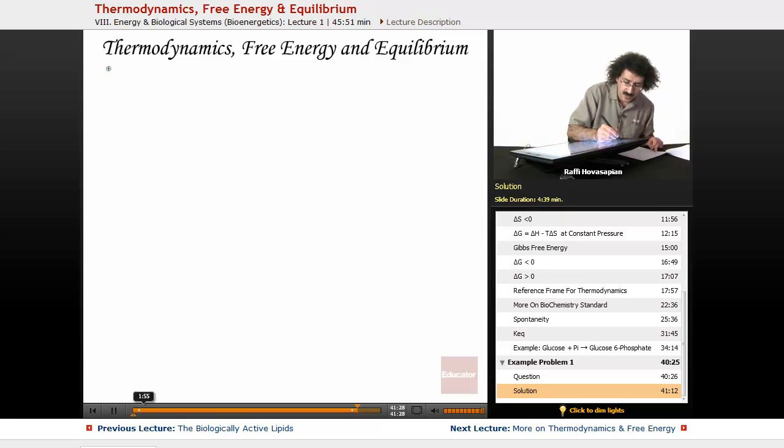They give us the delta G. From the delta G, we're going to find the Keq, and then after that, we're going to do an ICE chart.